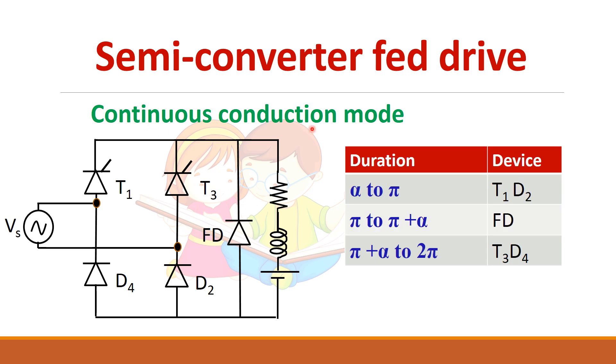So let us consider here only the continuous conduction mode. And from alpha to pi this thyristor T1 and diode D2 will conduct. So the path will be like this. And at pi plus alpha to 2 pi T3 and the diode D4 will be conducting. But the remaining period the freewheeling diode the current will be freewheeling through this diode.